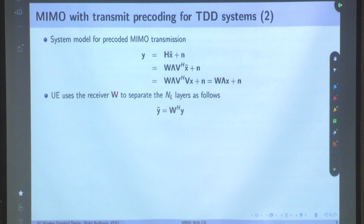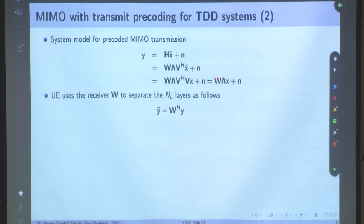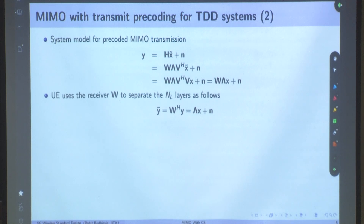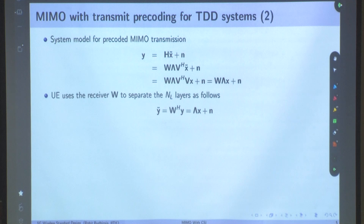What will the UE do? It will use receiver W Hermitian to separate the NL layers. UE also knows the channel. It multiplies the received signal with W Hermitian. What are we left with? W Hermitian times W gives identity, so y̆ = lambda·x + noise. Lambda is nl×nl, x is nl×1, so y̆ is nl×1. The noise term W^H·n has the same distribution as n because W has orthonormal columns, so noise statistics do not change.